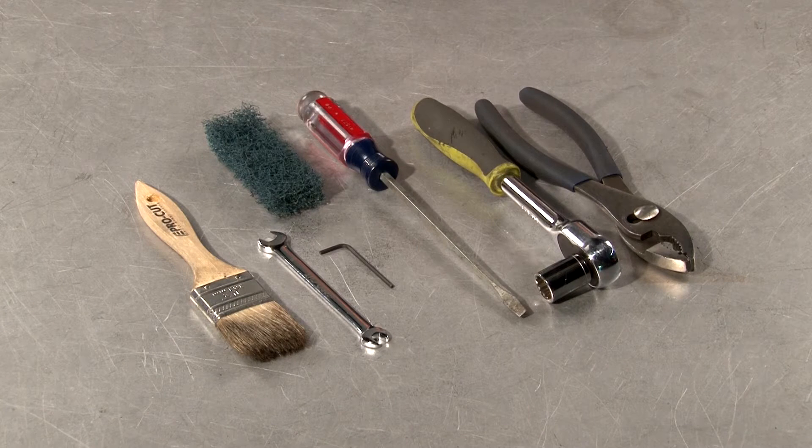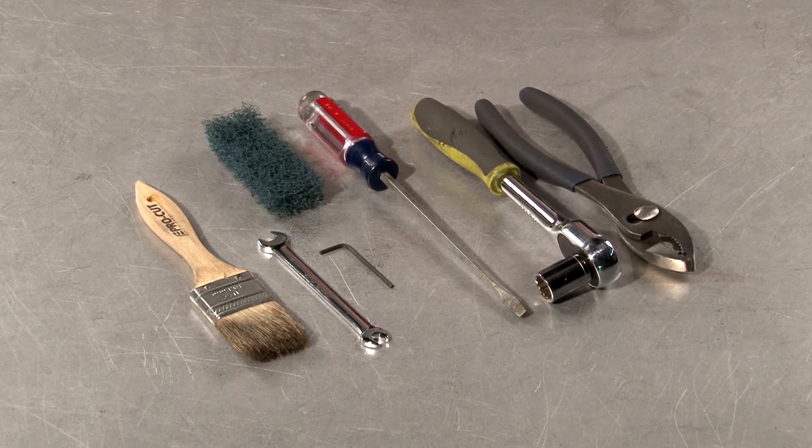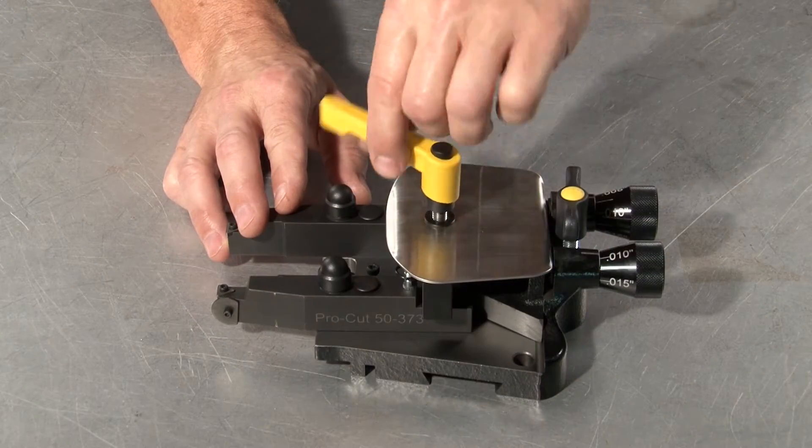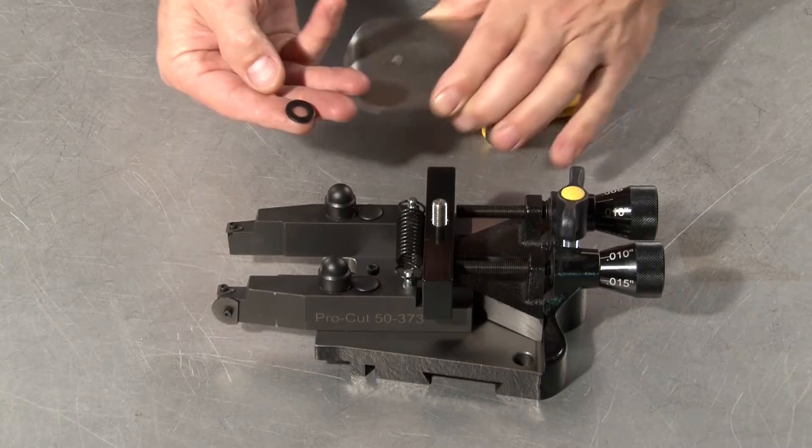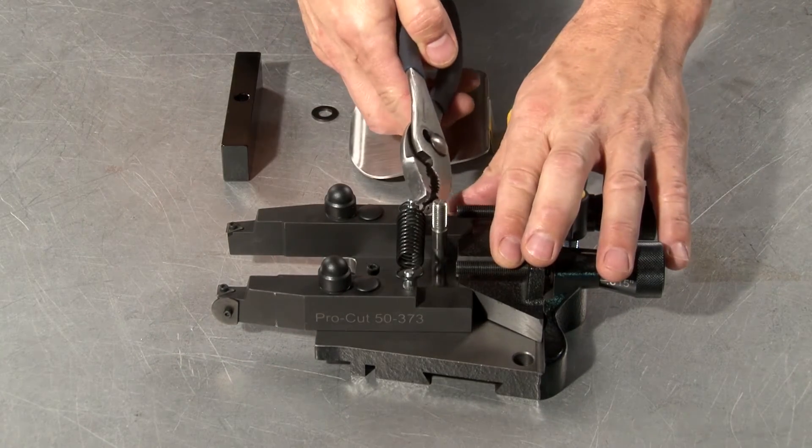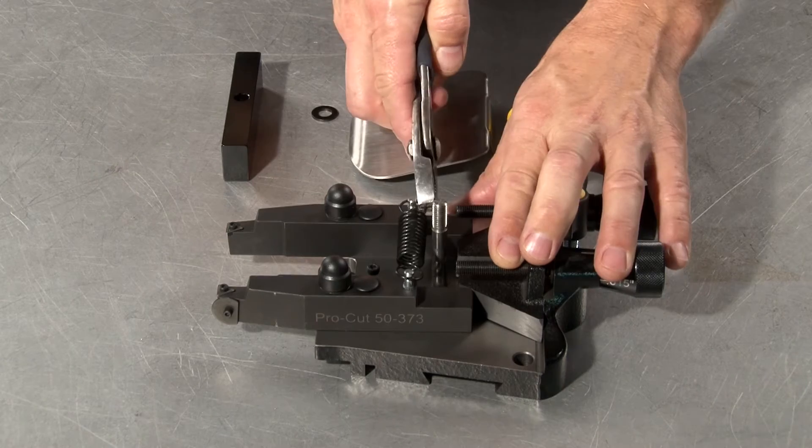To switch arms, some basic tools are required to complete the job. First, remove the cutting head lock-down lever, washer, cover plate, and pinch block. Then, remove the tool arm tension spring with a pair of pliers.